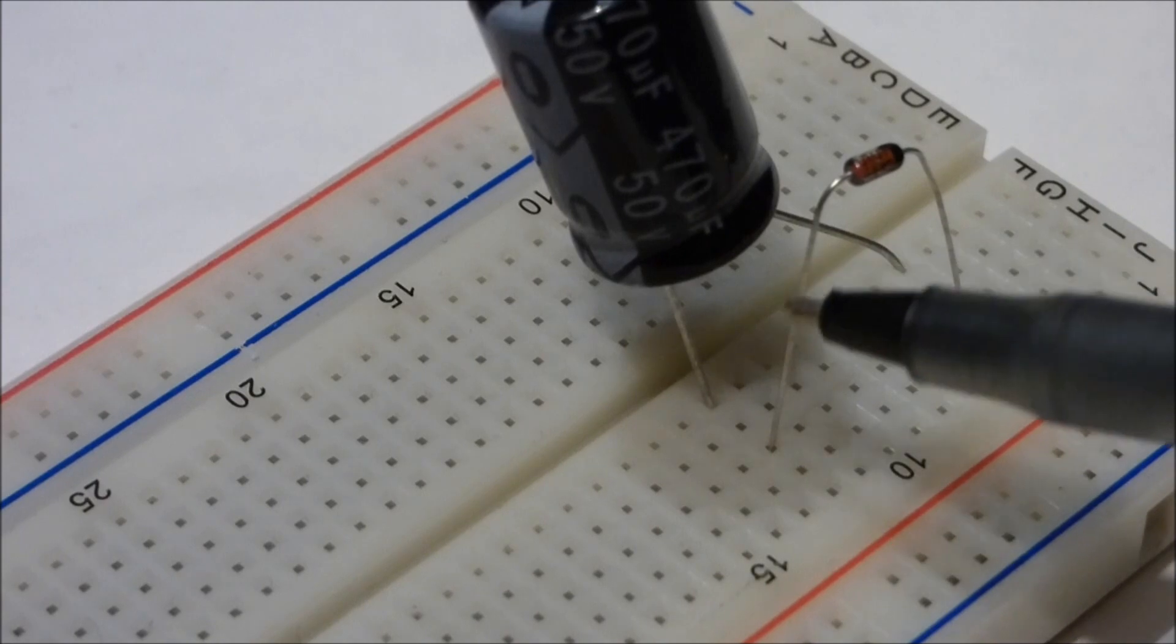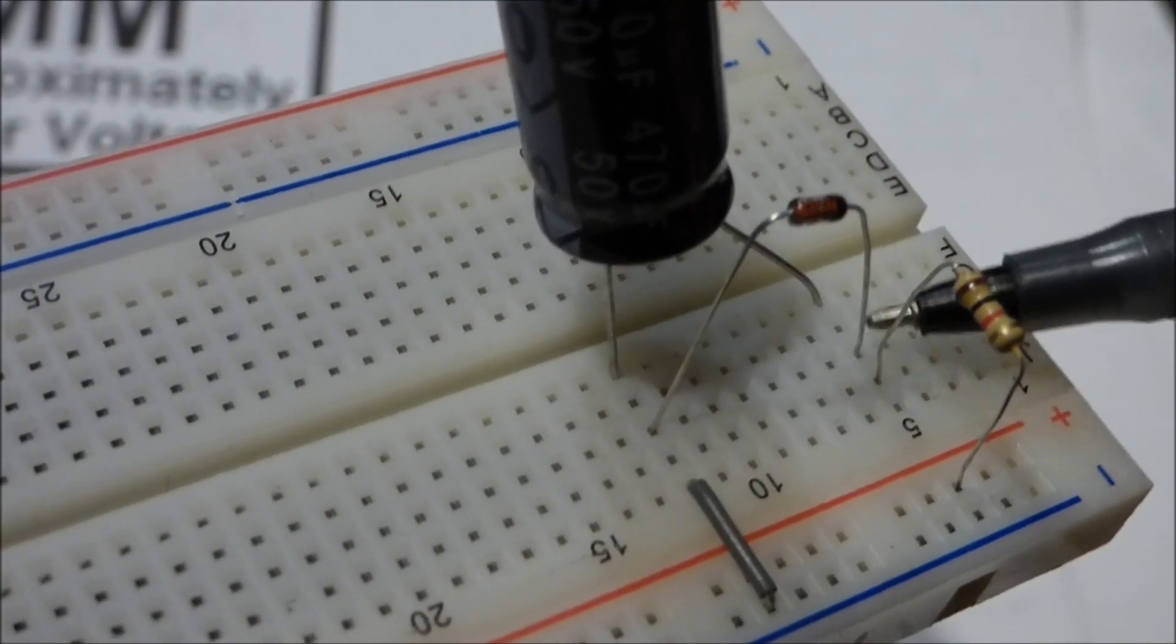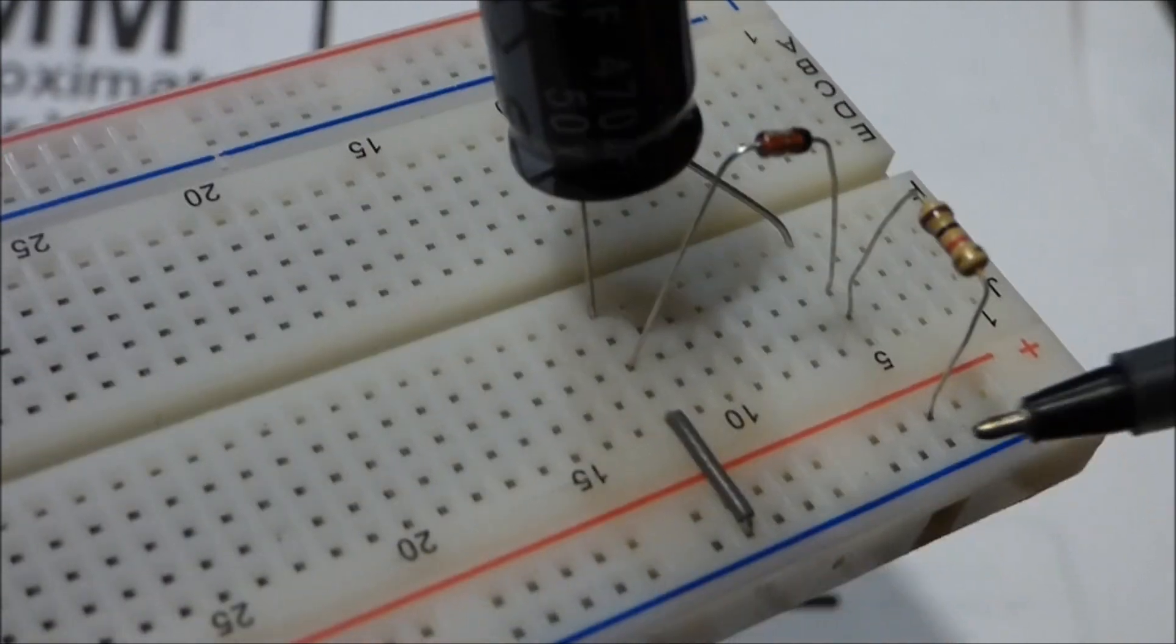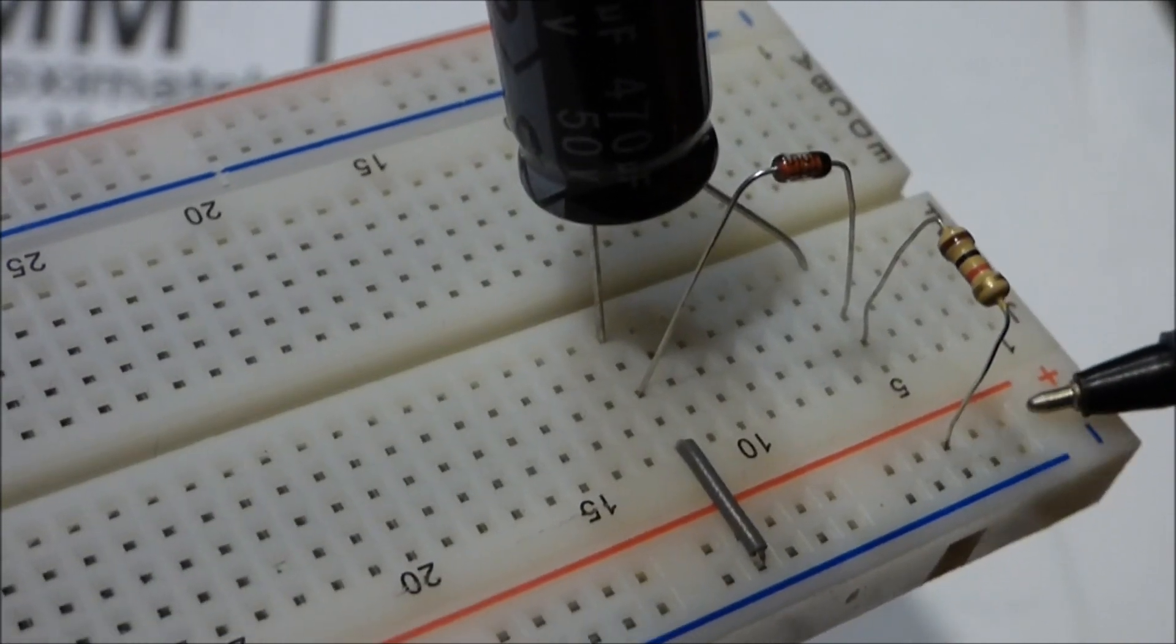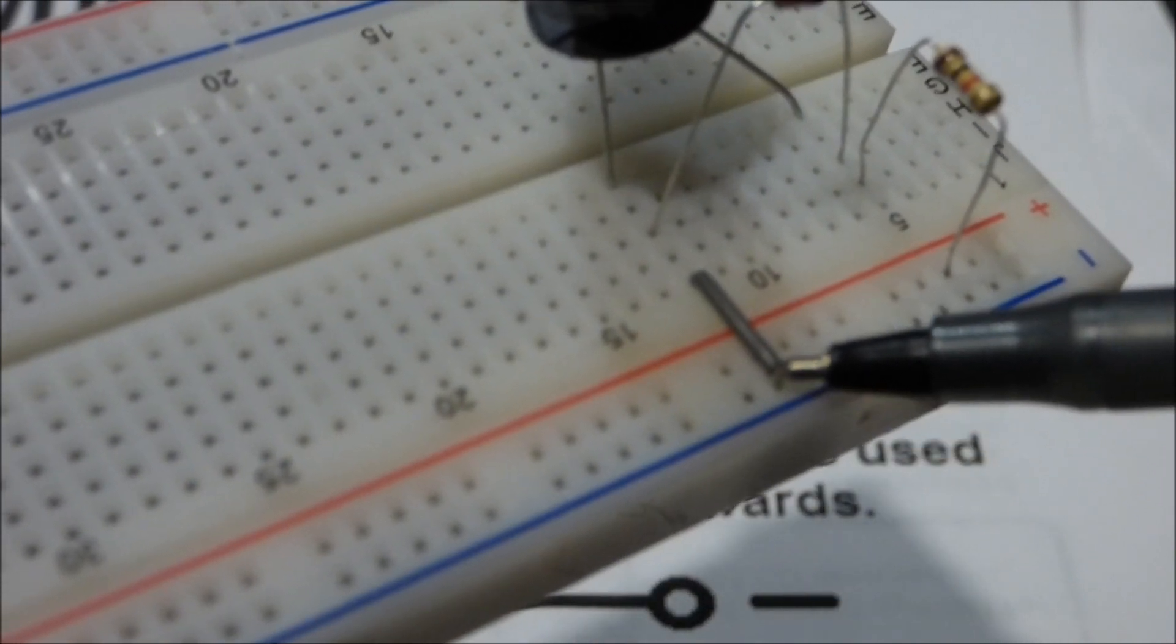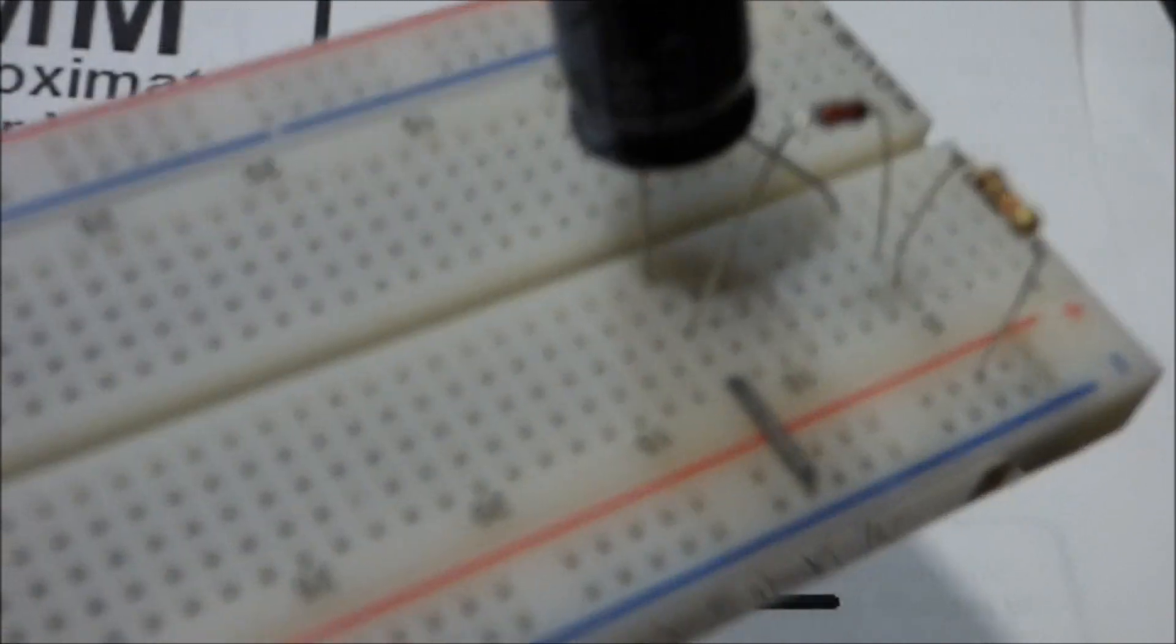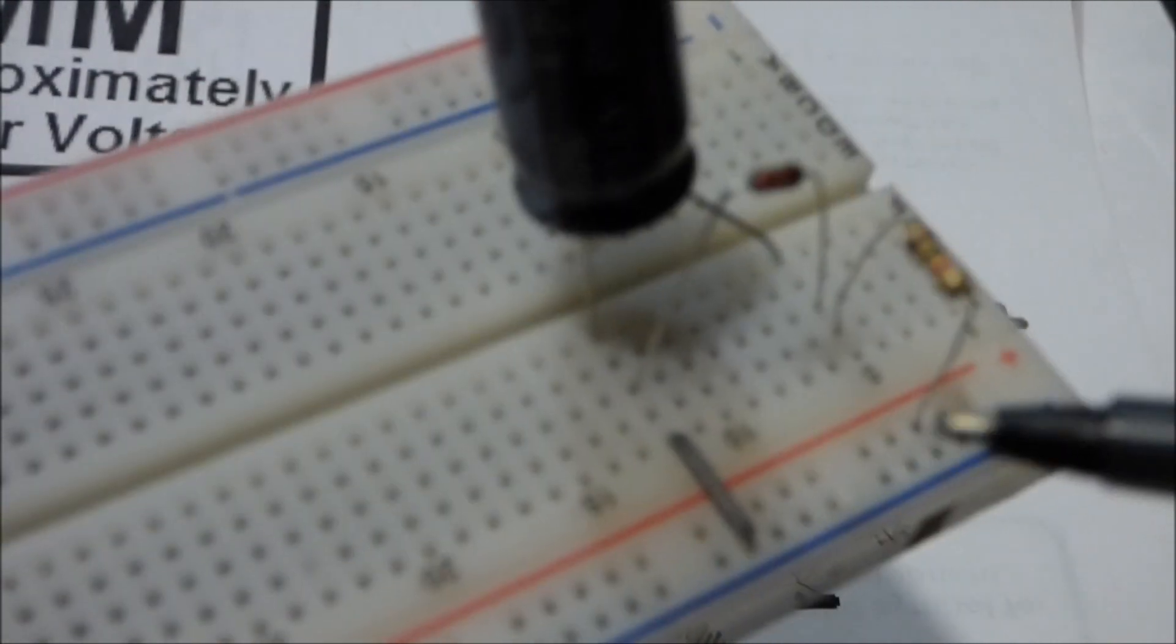Here I added a one kilo ohm resistor to the positive rail, and then down here directly to the negative I added this little jumper cable and that completes this circuit.